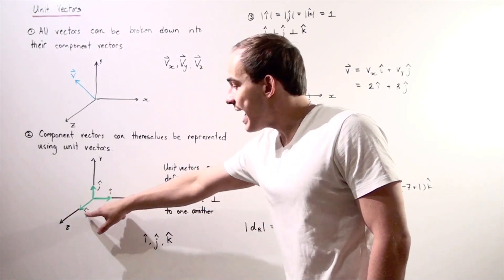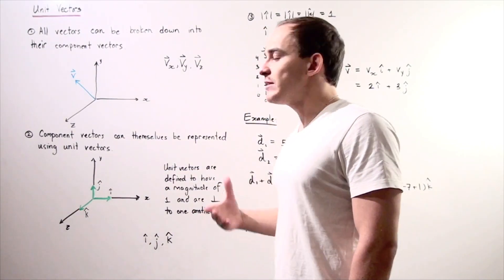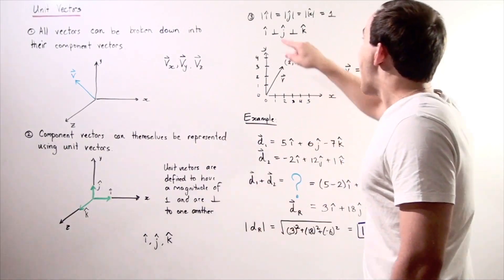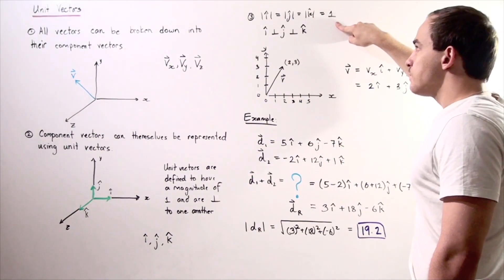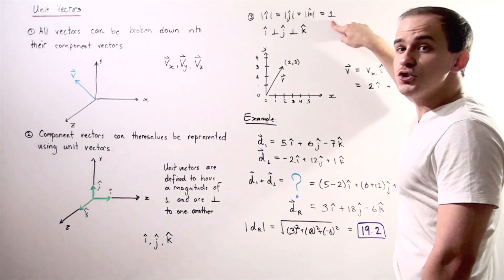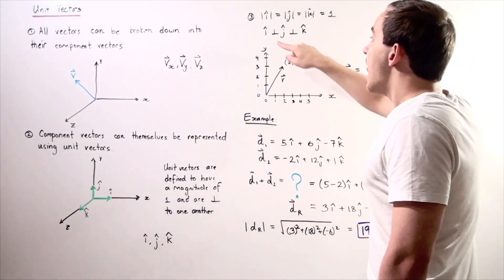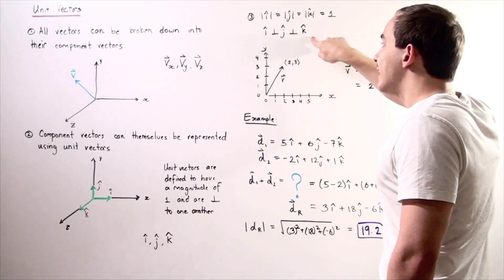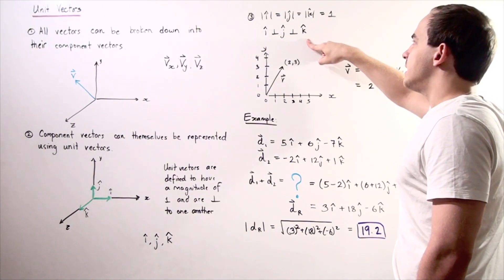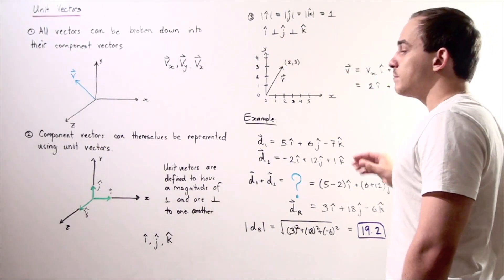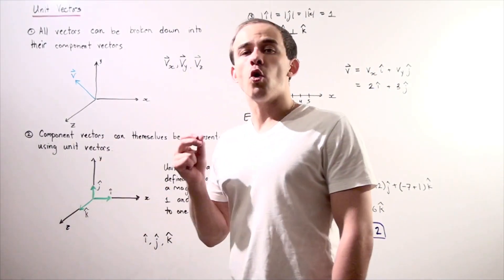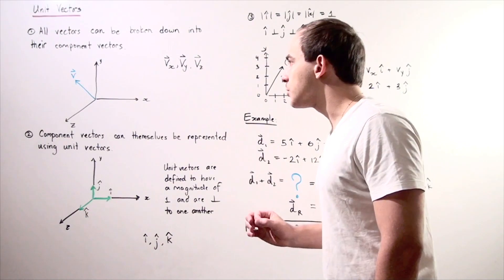The hat symbol simply means that we're dealing with unit vectors. Unit vectors have a magnitude of one, so the i, j, and k magnitudes all equal one. Furthermore, i is perpendicular to both j and k, j is perpendicular to both i and k, and k is perpendicular to both i and j — simply because our x, y, and z axes are all perpendicular to one another.